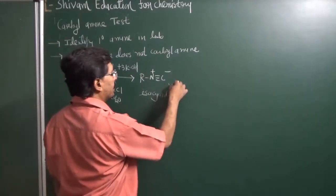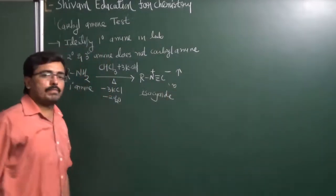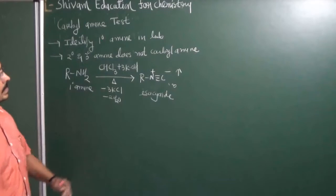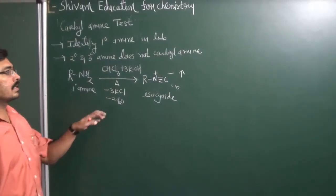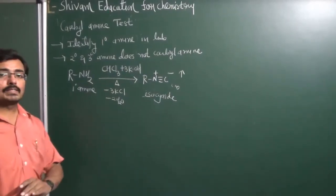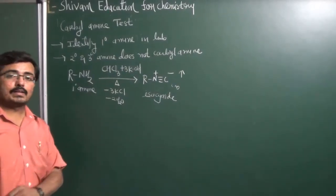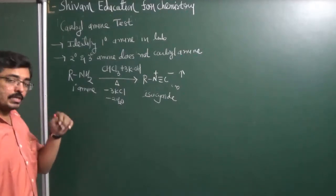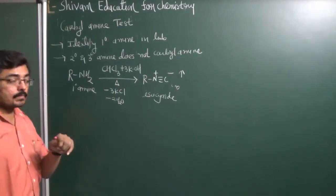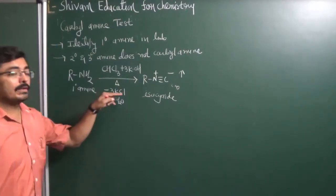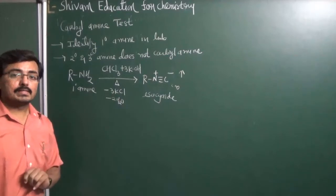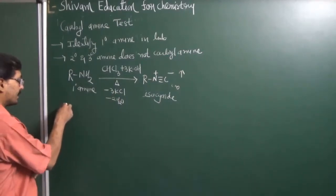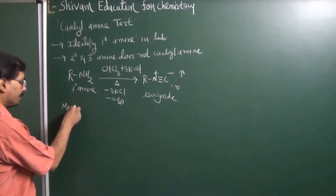Whatever isocyanide is produced, it will be in the form of gas. It is observed that primary amine gives the Carbylamine Test while secondary and tertiary amines do not give it. So the question arises: how does this primary amine convert? This is an exact step of the mechanism.